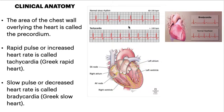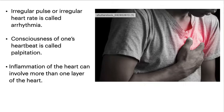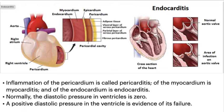The area of the chest wall overlying the heart is called the precordium. Rapid pulse or increased heart rate is called tachycardia; slow pulse or decreased heart rate is called bradycardia; irregular pulse or heart rate is called arrhythmia. Consciousness of one's heartbeat is called palpitation. Inflammation of the heart can involve more than one layer: inflammation of the pericardium is called pericarditis, of the myocardium is called myocarditis, and of the endocardium is called endocarditis.